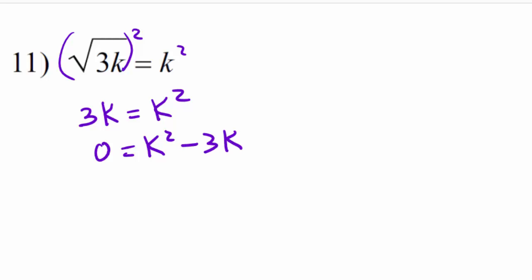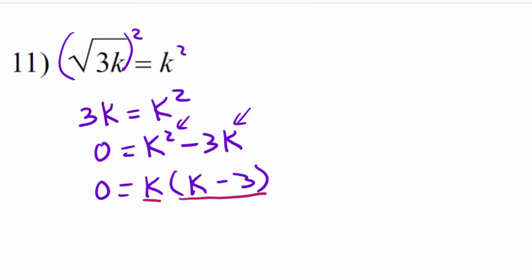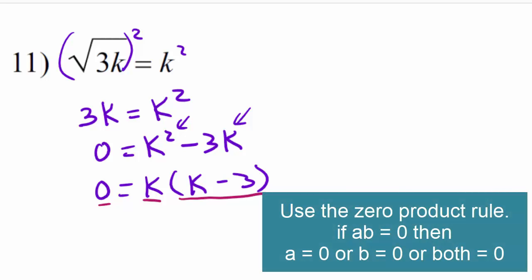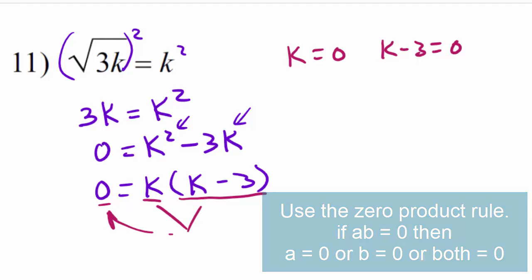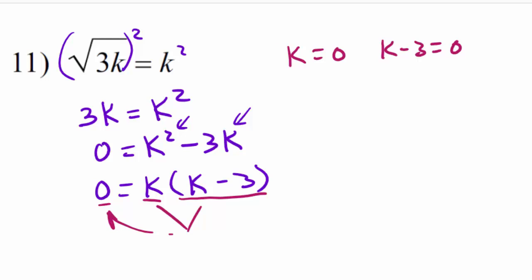To solve this, we factor. Both terms have a k, so we factor out k, leaving k times (k minus 3) equals zero. Since two numbers multiplied together equal zero, either k equals zero or k minus 3 equals zero. Solving the second equation gives k equals 3. So the two potential solutions are 0 and 3, but we need to substitute them back in to be sure.